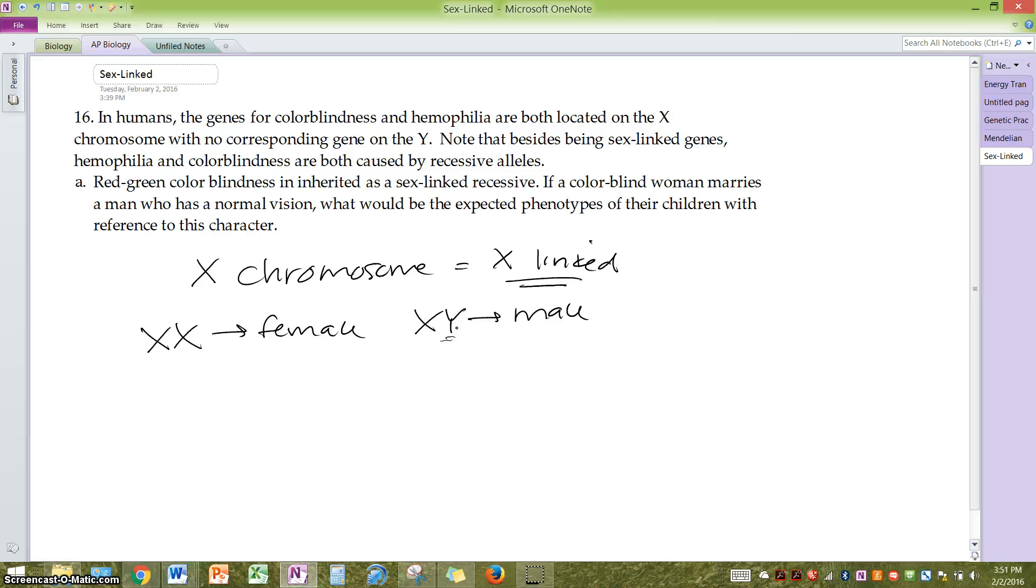So let's go through and talk about this one problem to give you a good background on sex-linked. So the first thing you want to do is read through and make a key. Red-green colorblindness is inherited as a sex-linked recessive, so we're going to be focusing. Whenever you see sex-linked recessive, that means that a female is going to need two copies to express.